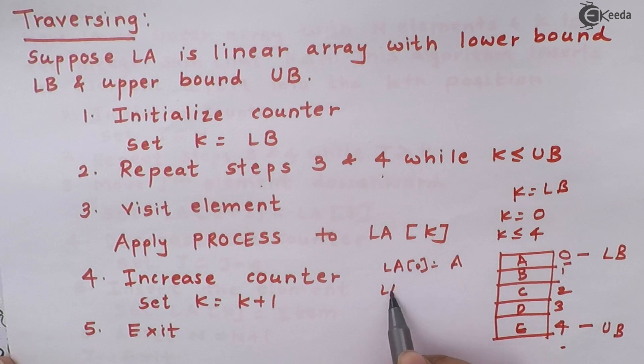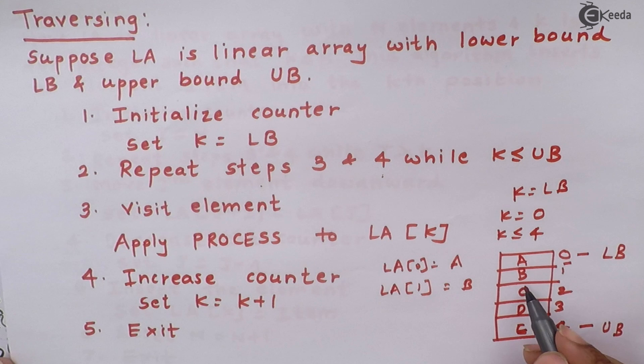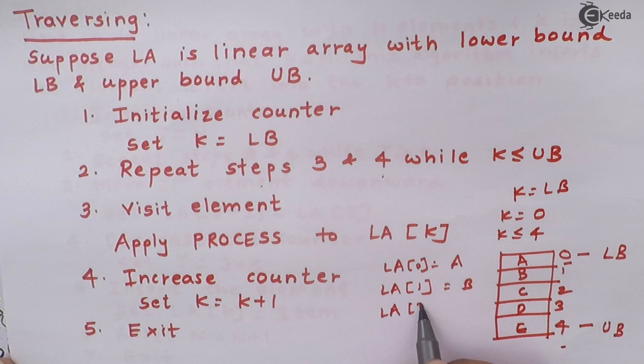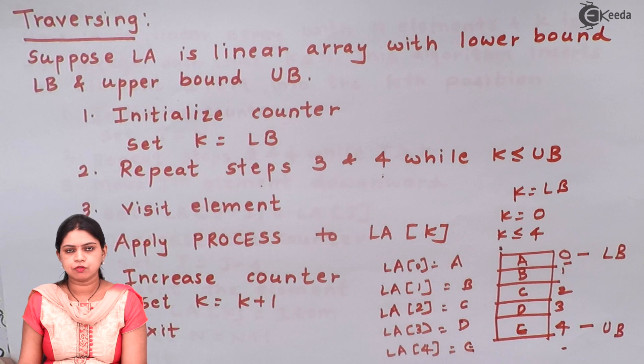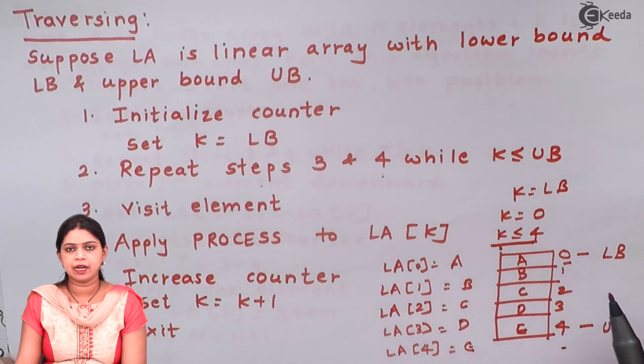So at the next iteration my value will become LA of 1 which is b. So again I will be applying some process on b and again I will be incrementing my value of k by 1. Second iteration it will become LA of 2. LA of 2 is nothing but my c. So again I will be applying some process onto c and I will increment my counter. I will keep on incrementing my counter till my counter's value is less than equal to 4. So after 4th iteration my k's value will become 4 and this condition will get satisfied.